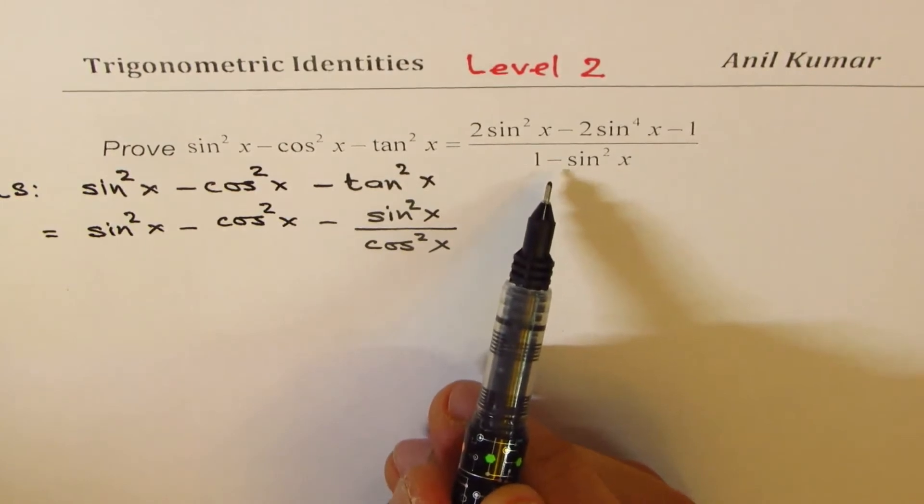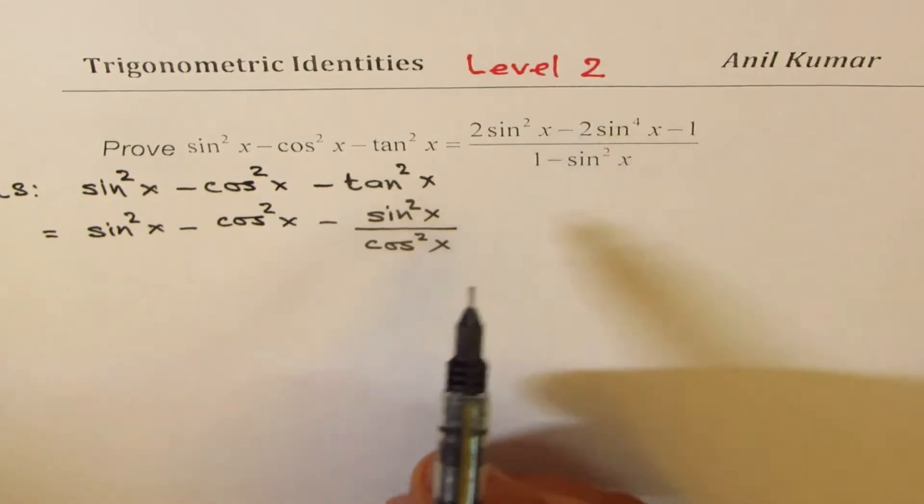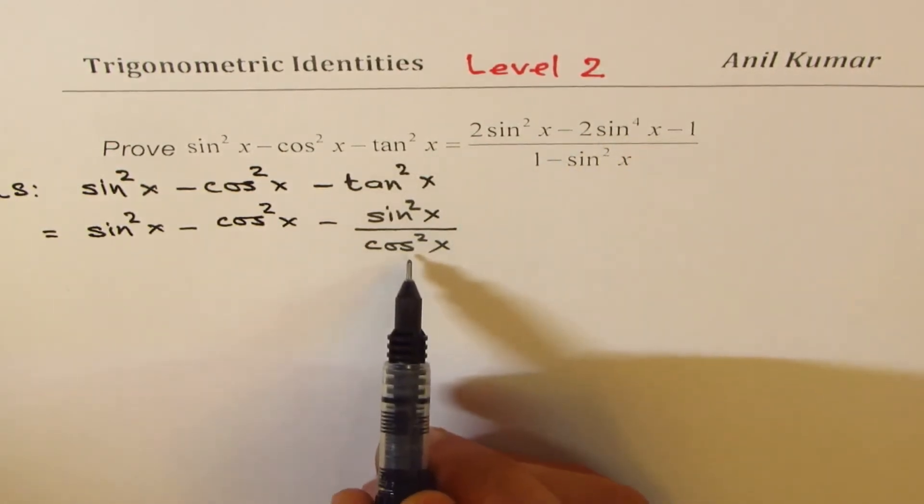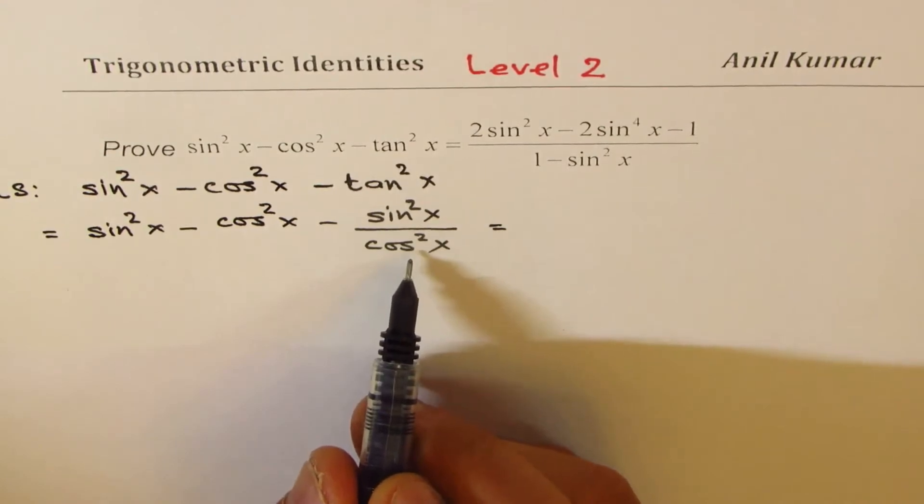Since on the right side we have 1 - sin² x in the denominator, and all the terms are sine, it's a good idea to convert these cos also in terms of sine. So what I will do now is I will write this also as sine.